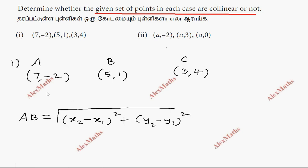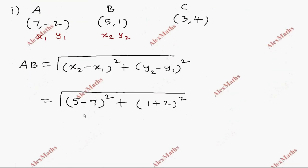We have points A and B. So, root of x2 minus x1, which is 5 minus 7 whole square plus y2 minus y1, 1 minus minus 2 whole square. We have a simplification: root of minus 2 whole square plus 3 square. Minus 2 whole square is 4, 3 square is 9. So, total root 13.